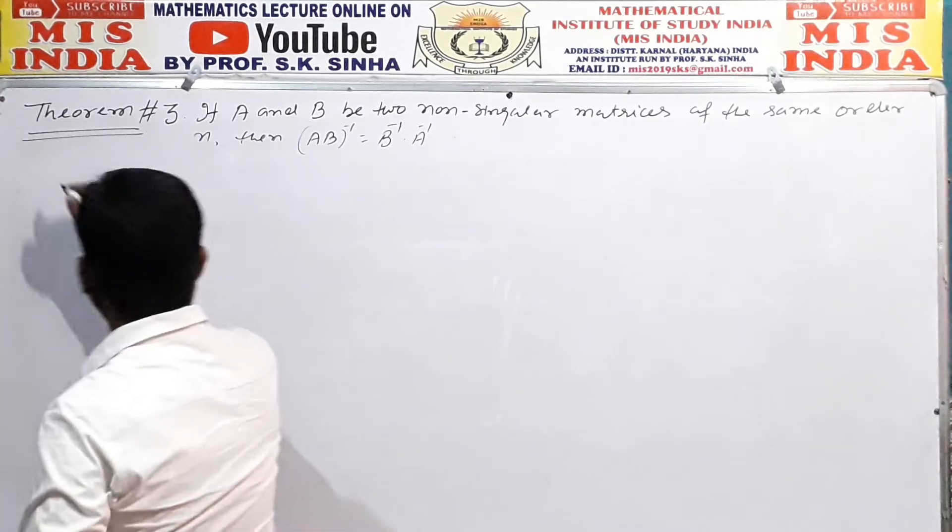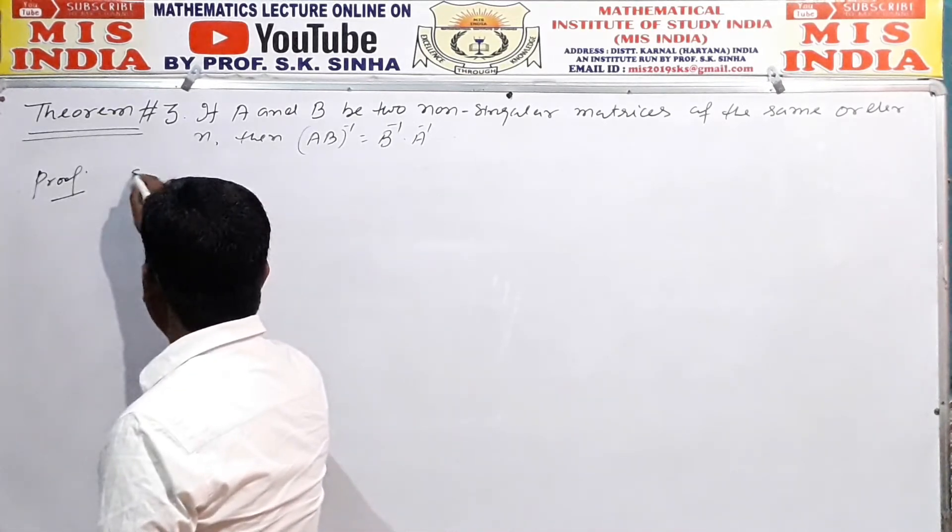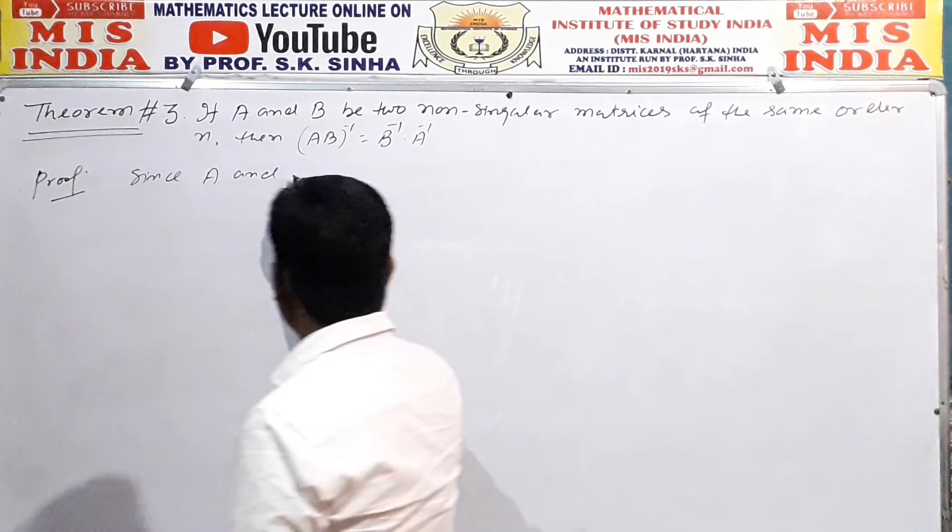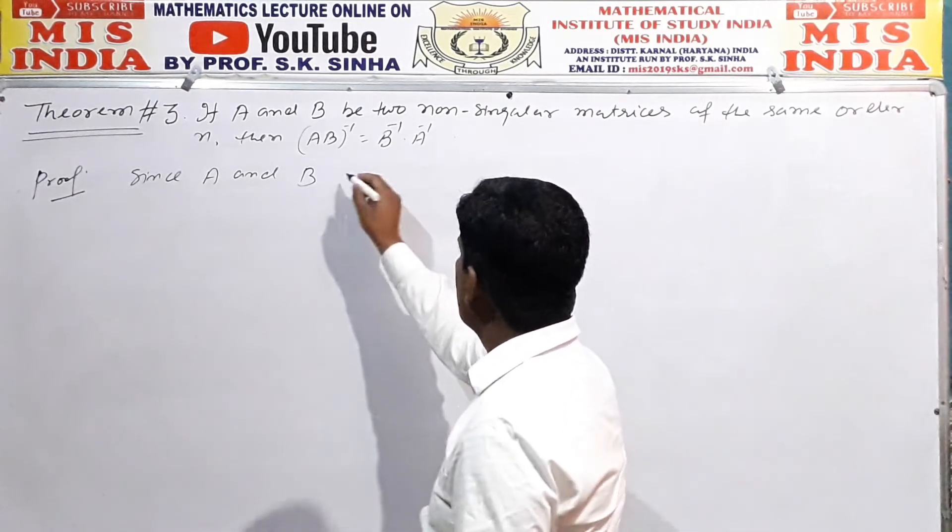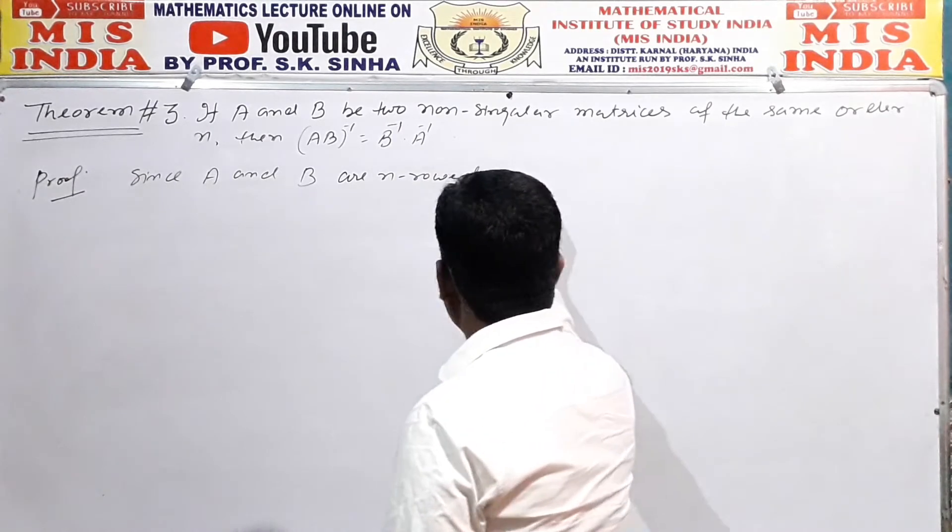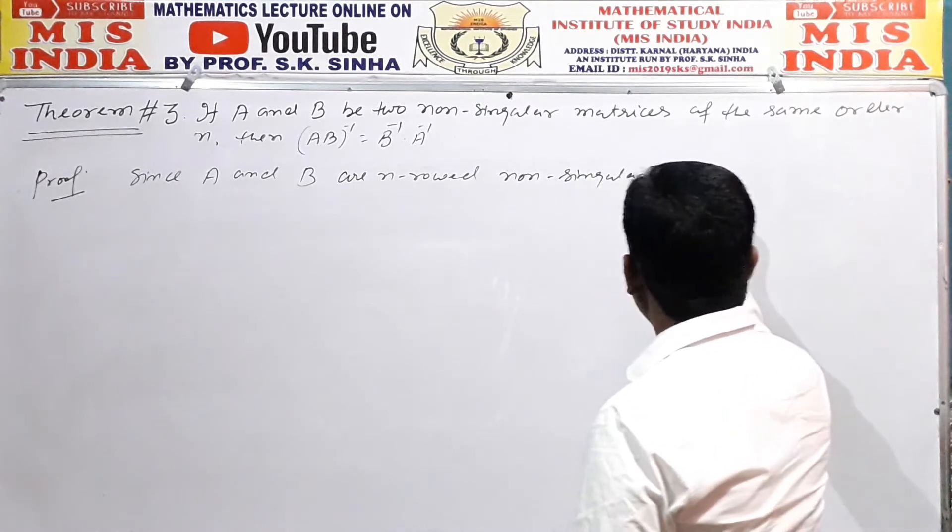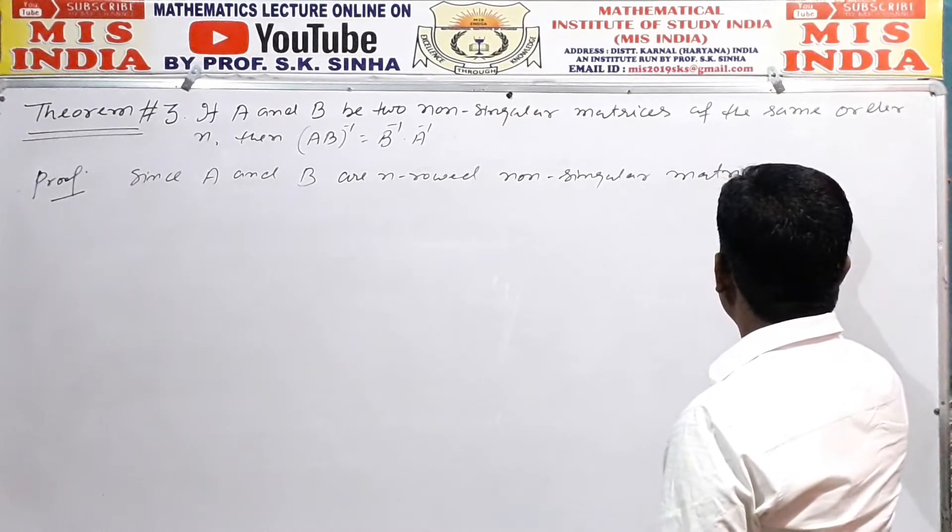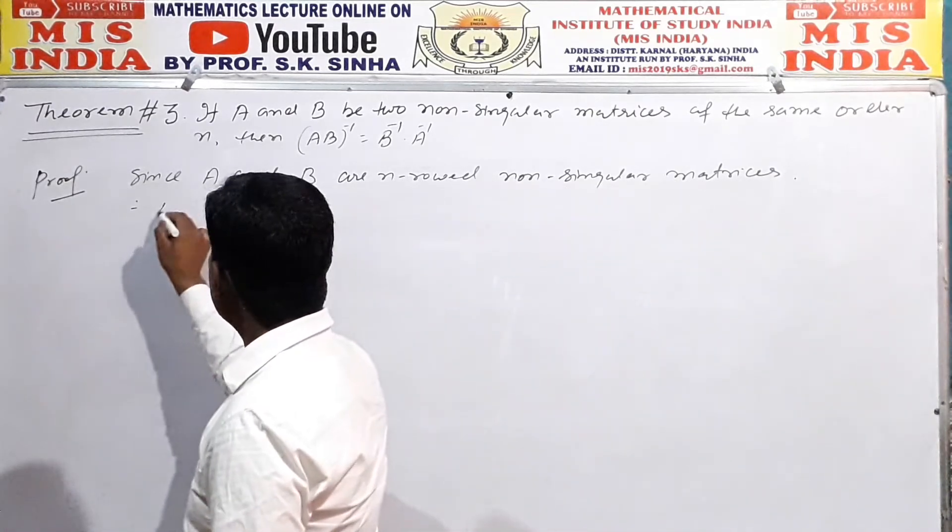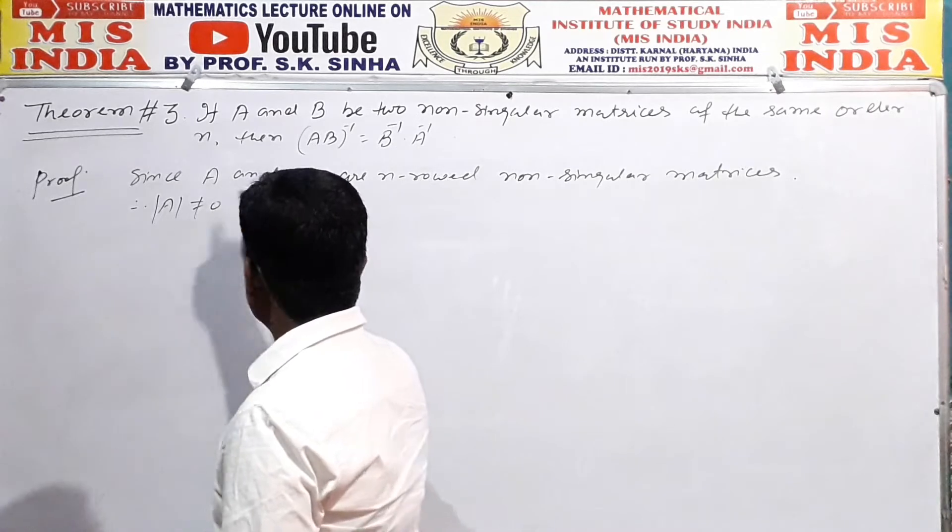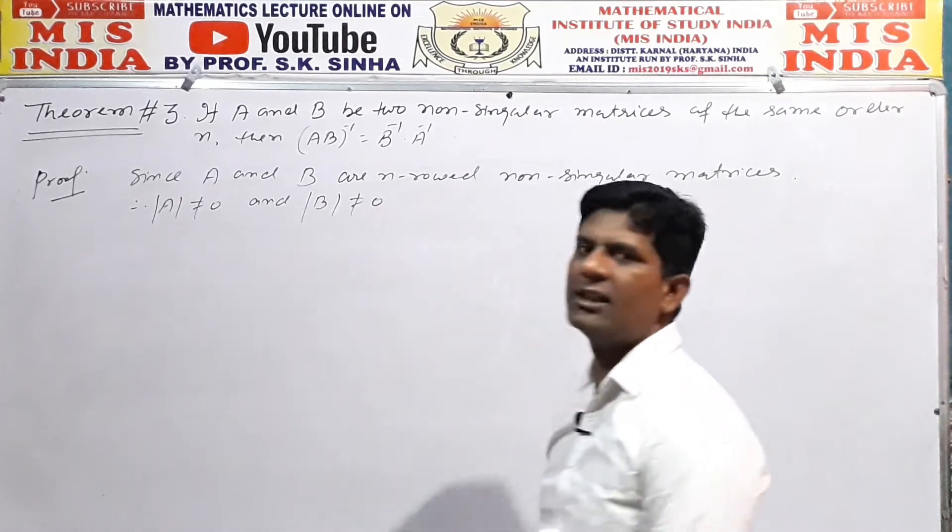Now proof of this theorem. Let's start. Since matrix A and B are n-order non-singular matrices. Non-singular matrices means determinant of the matrix A and B is not equal to 0. Therefore, it means determinant of matrix A is not equal to 0, and determinant of matrix B is also not equal to 0.